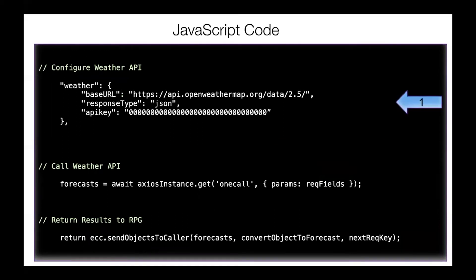Let me explain what we're actually doing in the JavaScript. First, we have the actual description of the API — the URL where to get to it and our API key. Then we have the actual call to the weather service API. And then we have the function that returns the data back to the RPG program. So basically this is all the JavaScript you need. A few lines of RPG code, a few lines of JavaScript — that's all we need to run the web service call.